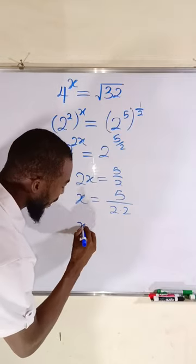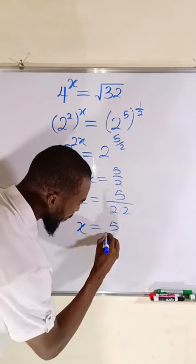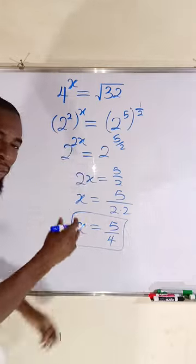2 times 2 is 4. And finally, x value is equal to 5 divided by 4. Ta-da!